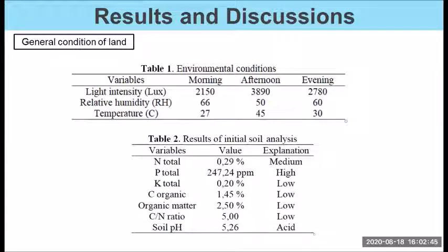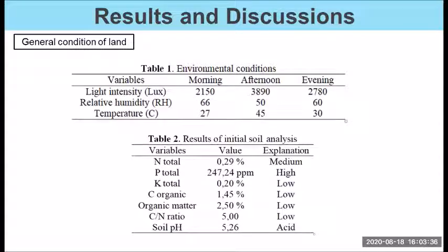The study was conducted in the dry season. Environmental conditions at the Jumatono experimental field showed light intensity in the morning of 2,150, afternoon 3,890, and evening 2,730. Relative humidity in the morning was 66%, afternoon 50%, and evening 60%. Temperature in the morning was 27°C, afternoon 45°C, and evening 30°C. The research field has alluvial soil type. Results of soil chemical analysis showed N total is medium, P total is high, K total is low, C organic is low, organic matter is low, C residue is low, and soil pH is acidic.